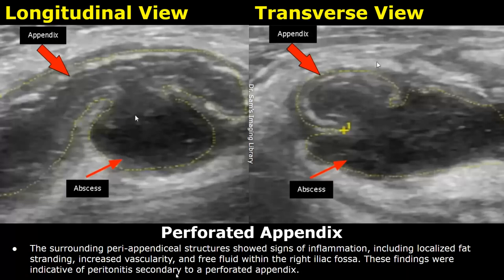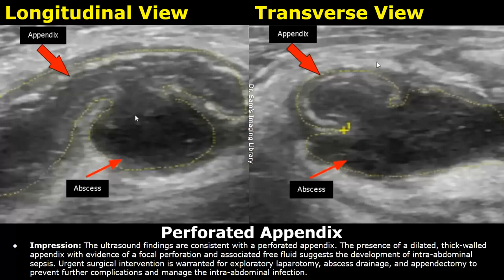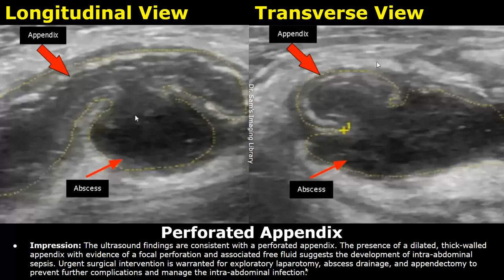These findings were indicative of peritonitis secondary to a perforated appendix. The ultrasound findings are consistent with a perforated appendix. The presence of a dilated, thick-walled appendix with evidence of focal perforation and associated free fluid suggests the development of intra-abdominal sepsis. Urgent surgical intervention is warranted for exploratory laparotomy, abscess drainage, and appendectomy to prevent further complications and manage the intra-abdominal infection.